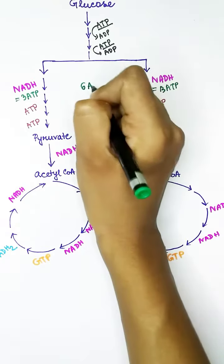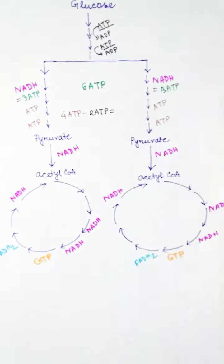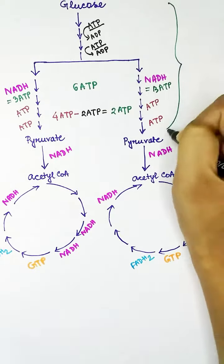So six ATPs from NADH, and two ATPs were already gained in glycolysis, so total ATP from glycolysis will be six plus two, that is eight ATPs.